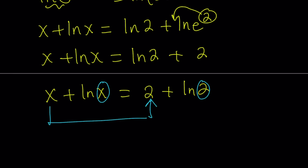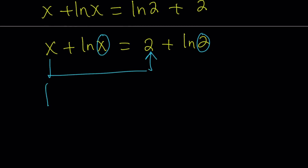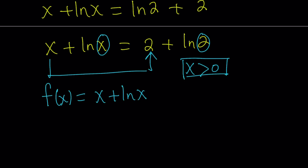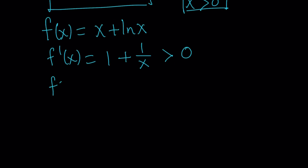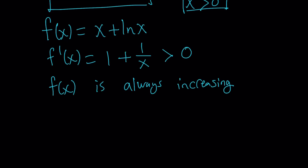But there are a couple of things we need to talk about. This looks like a solution, but is it the only solution? How many solutions are there? We're going to look at it from a functional perspective and consider f of x equals x plus ln x. Because of ln x, x needs to be positive, so we're only considering positive values of x. Differentiating gives us 1 plus 1 over x, and since x is positive, this is always positive, meaning f of x is always increasing on that interval.